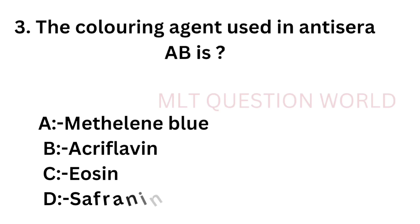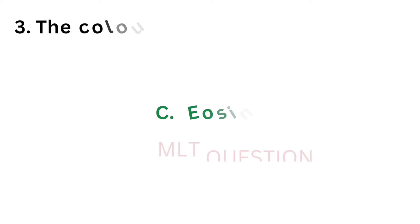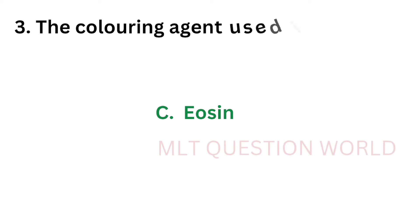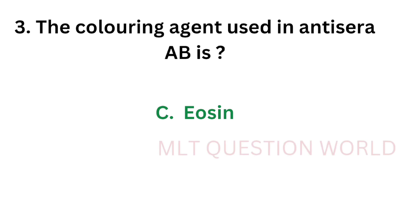Question number 3: The coloring agent used in anti-sera A and B is — option A: Methylene blue, option B: Aquiflavin, option C: Eosin, option D: Sephronin. Which of the following coloring agents is used in anti-sera A and B? The correct answer is option C, Eosin. The coloring agent used in anti-sera A and B is eosin, and the color is pink.